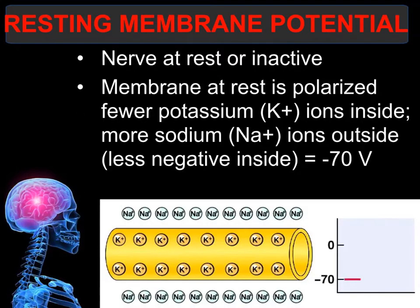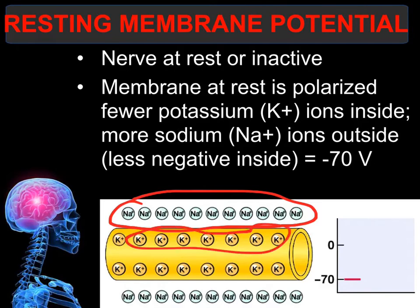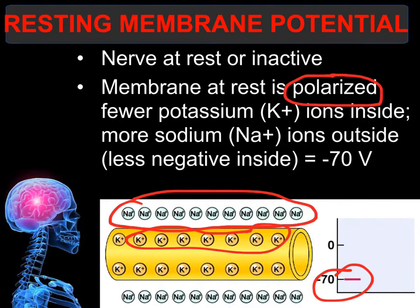A resting membrane potential is a state where there is no nerve impulse traveling down the axon of the neuron, and the nerve is inactive or at rest. During this time, the charge inside the nerve cell is negative 70 millivolts, due to the fact that there are more sodium ions — which are positive ions — on the outside compared to potassium on the inside.